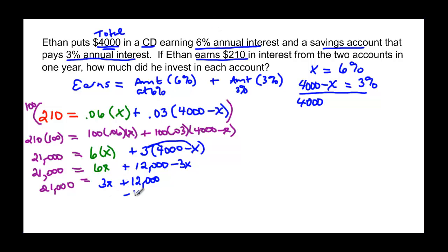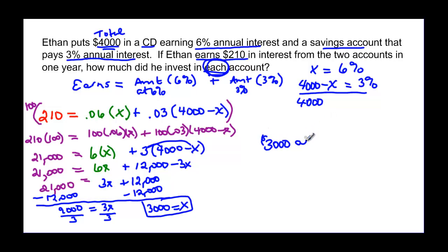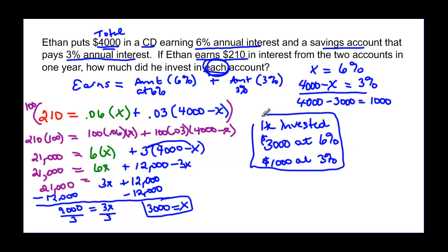I need to subtract my 12,000 from both sides. That's going to give me 9,000 equal to 3x. And when I divide by 3, then x is going to be equal to 3,000. Now, how much did he invest in each account? He invested $3,000 at x, which was at 6%. But how do I know how much he invested at 3%? Well, 4,000 minus 3,000 is going to be $1,000. He invested $3,000 at 6% and $1,000 at 3%. Remember, we always answer in a sentence.